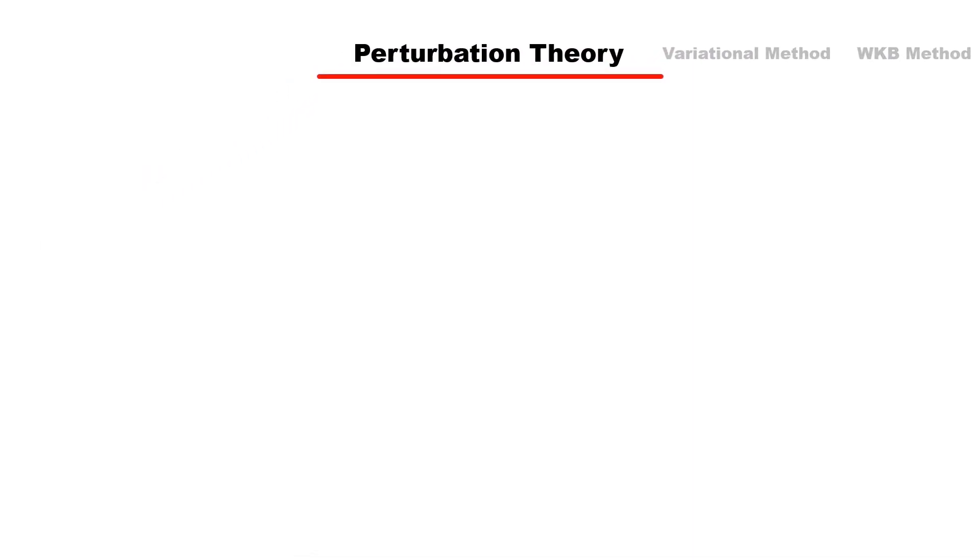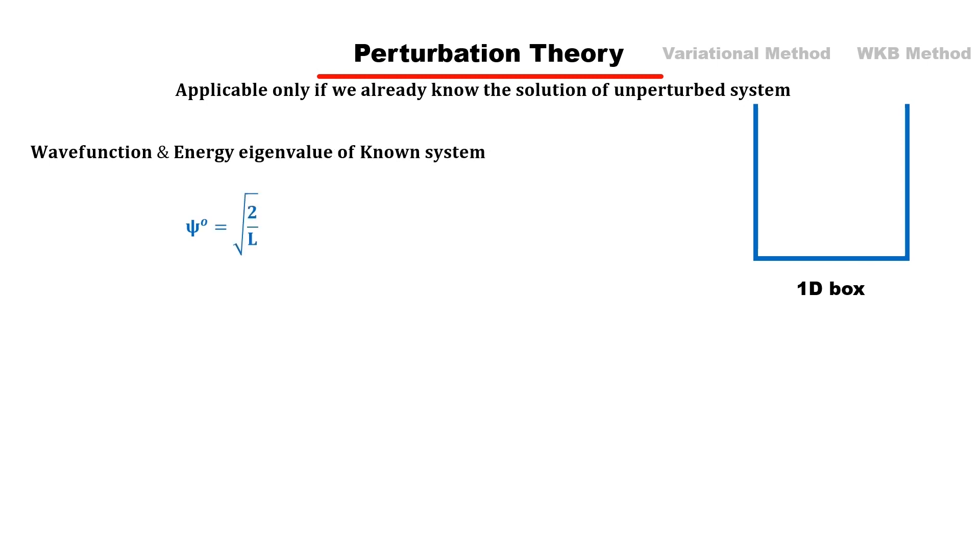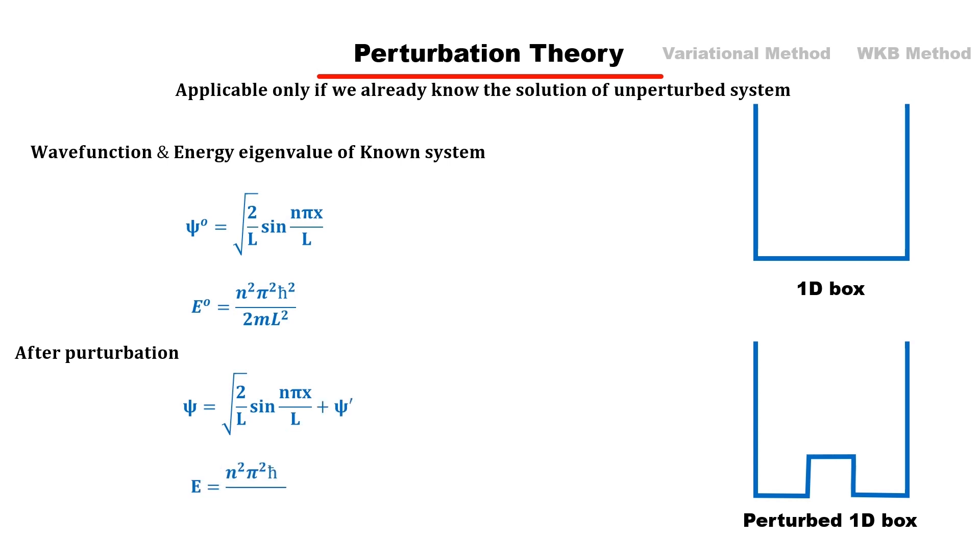Perturbation theory is based on the fact that if we know the exact solution of a system, then due to some slight change in that system, what will be the new solution? Like we know the solution of a particle in 1D box system, wave function and eigenvalue exactly. If the potential of this 1D box is modified slightly, some additional terms are added to the wave function and eigenvalue, which is the solution for the new system. In this way, adding correction to previously known wave function and eigenvalue is called perturbation theory.